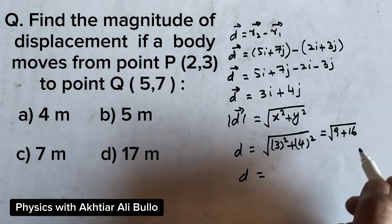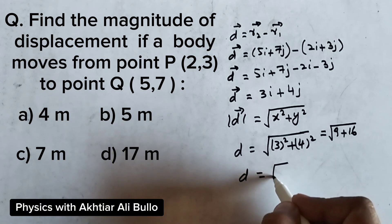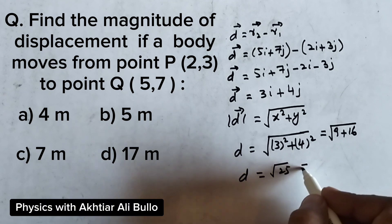The magnitude of displacement will be 9 plus 16, which is under root 25. The under root of 25 is obtained as 5.